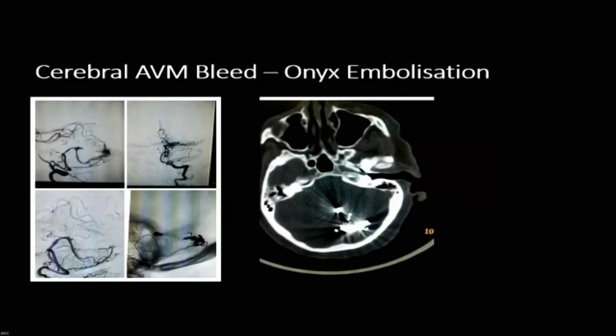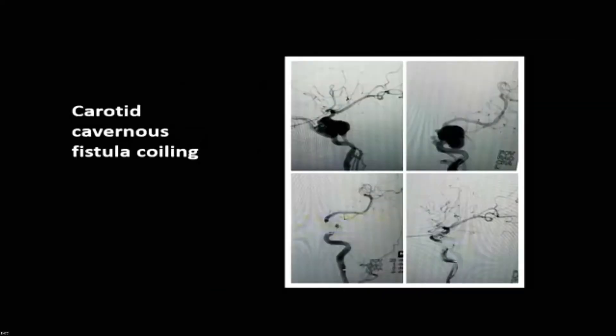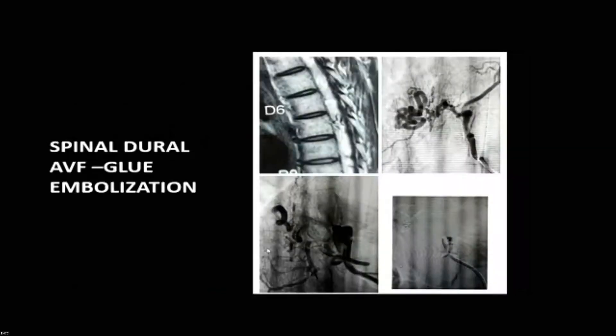A cerebral AVF was also embolized. For epistaxis with a straight segment vessel, a stent graft was placed. For carotid-cavernous fistula, coiling can be done and vision can be easily salvaged. A spinal dural AVF was treated with glue embolization — flow voids were identified, spinal DSA confirmed the feeders, all feeders were occluded, and complete cure of the spinal dural AVF was achieved.